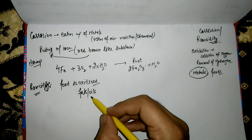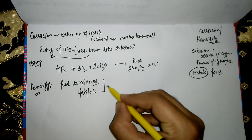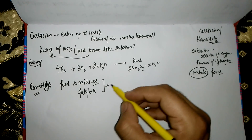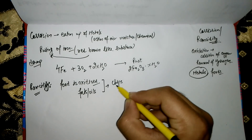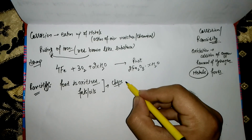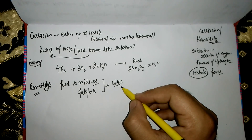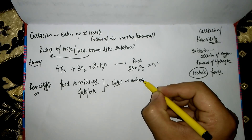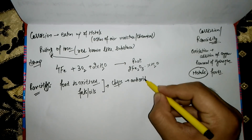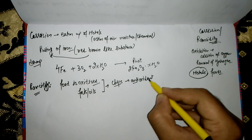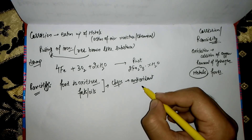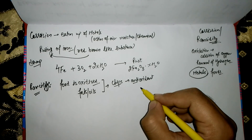To slow down or avoid the process of rancidity, we can use nitrogen gas — for example, when packaging chips. We can also add antioxidants, which work against oxidants and help prevent the oxidation caused by water and moisture.